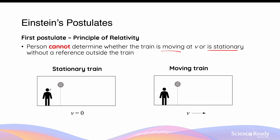Imagine if you're the person in the train and there are no windows. As you observe the falling motion of the ball, because the motions are identical in both scenarios, you will not be able to distinguish between which of the two carriages you're on. In other words, you will not be able to tell if the train is not moving or is moving at a constant velocity. This is the implication of the first postulate.